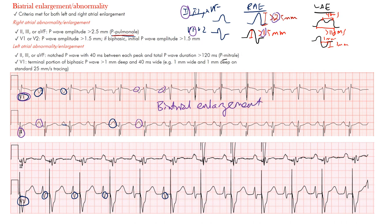The same was true in the second example. Those big spikes are pacemaker spikes, but you can clearly see the left atrial abnormality. You can also see peaked P waves from the right atrium in V1. In lead II you can see that peaking — these are perfect examples of biatrial enlargement.